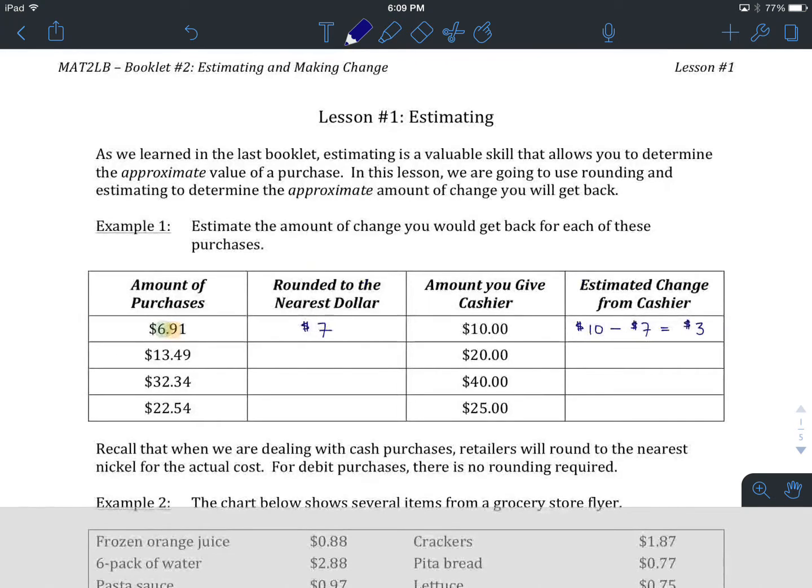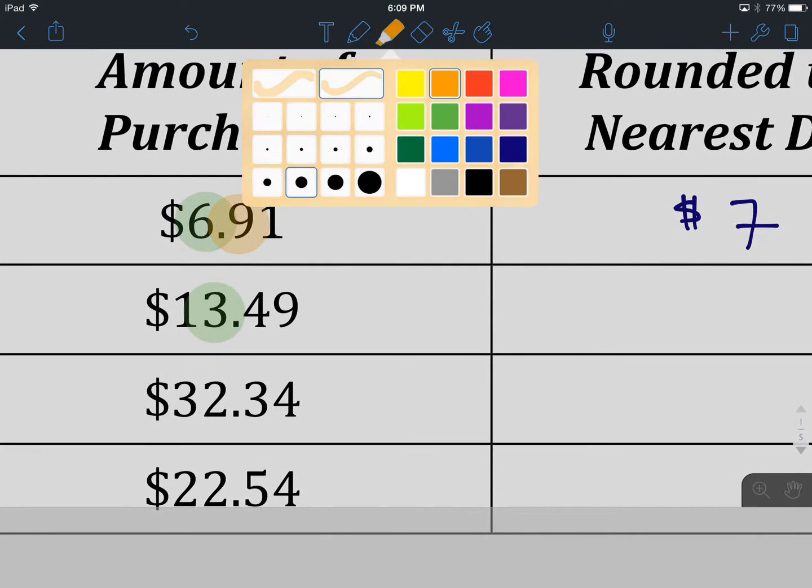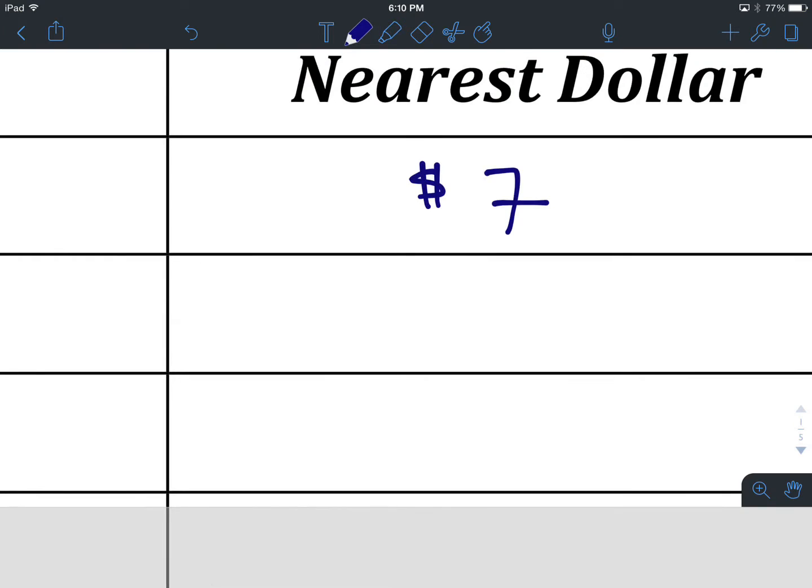Now let's take a look. We'll repeat this process for our second purchase. Our second purchase is $13.49. Again, we're looking to round to the nearest dollar. There is the dollars, or ones. We look to the digit to the right, or after it, to see how we round. A 4 requires us to round down, which means keeping it the same. So our nearest dollar value in this case is going to be $13.